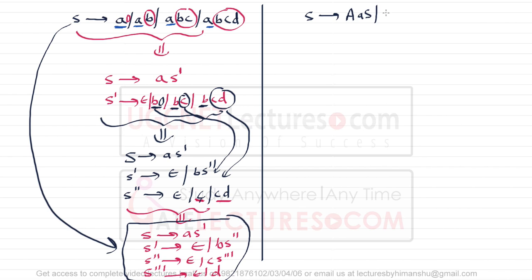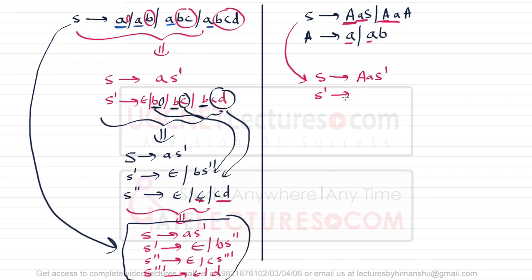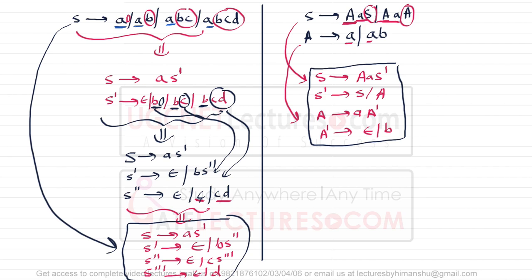Consider one more example: S can derive a a S slash a a A, and capital A can generate a a a slash a b. In the first production the first two symbols are 'a a', so there is left factoring. Eliminating it: S derives a a S', where S' derives S slash A. For the second production, to remove left factoring from A: A derives a A', where A' derives epsilon slash b. Now in this entire grammar there is no left factoring.